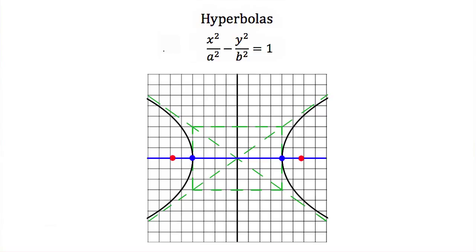Now let's compare the standard form equation of a hyperbola to the graph of a hyperbola. In standard form, it's the a and b terms that define the shape. Notice this hyperbola has two foci and two vertices, and the transverse axis in this case is the x-axis. We also have two asymptotes drawn in with a green dotted line, and a box that our asymptotes intersect. These asymptotes meet at the center of the hyperbola, which is at the origin.